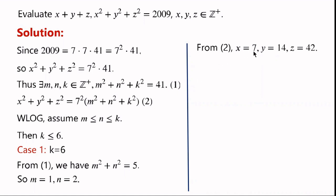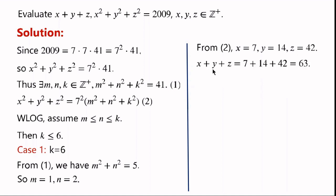From equation 2, x equals 7m; m equals 1, so x equals 7. n equals 2, so y equals 14. From equation 3, z equals 7k; k equals 6, so z equals 42. So x plus y plus z equals 7 plus 14 plus 42, which equals 63.